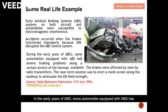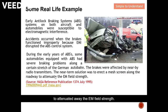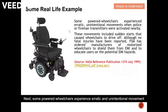In the early years of ABS, some automobiles equipped with ABS had severe braking problems along a certain stretch in Germany. The brakes were affected by a nearby radio transmitter. The near-term solution was to erect a mesh shield along the railway to deflect the EM field strength.